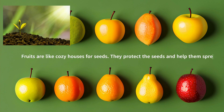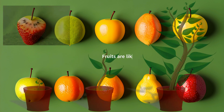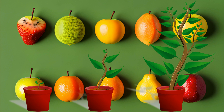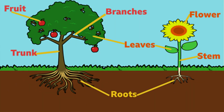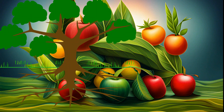And there you have it — our plant adventure. Roots, stems, leaves, flowers, and fruits, all working together to make plants happy and healthy. So the next time you see a plant, remember to say hello to its different parts.